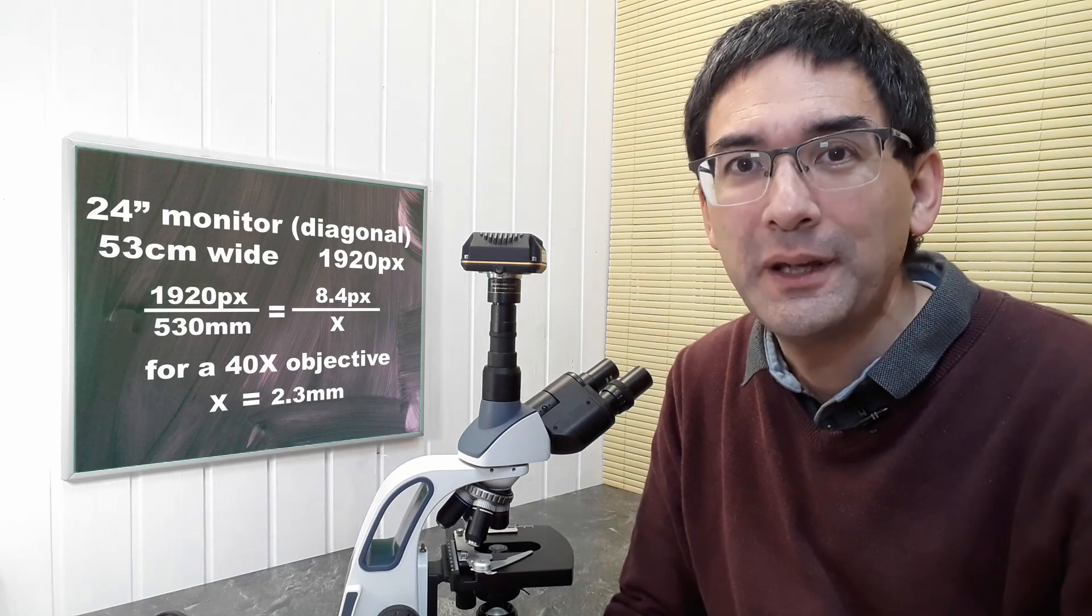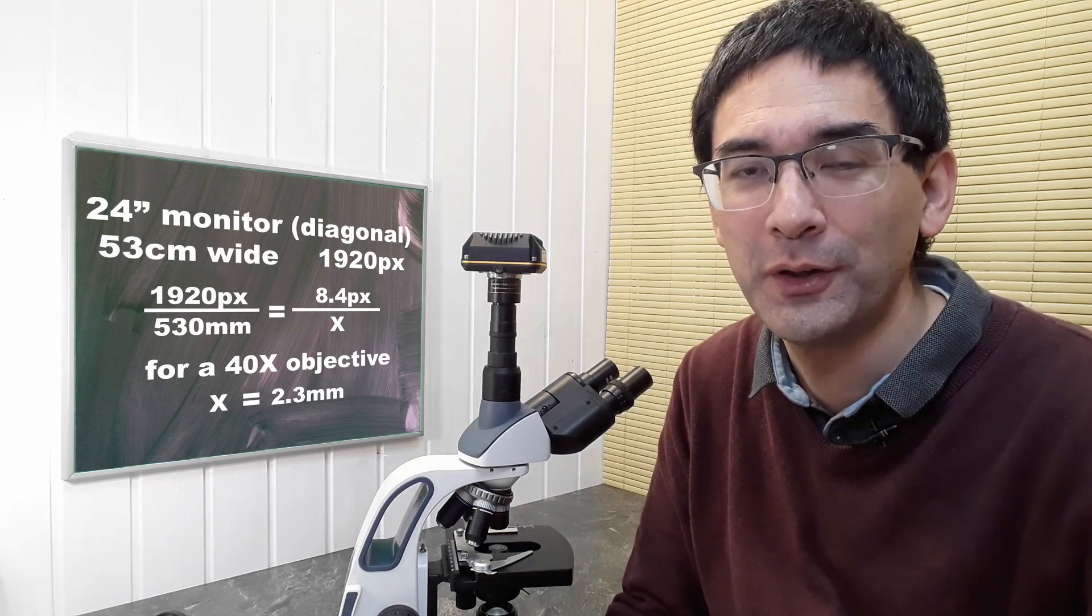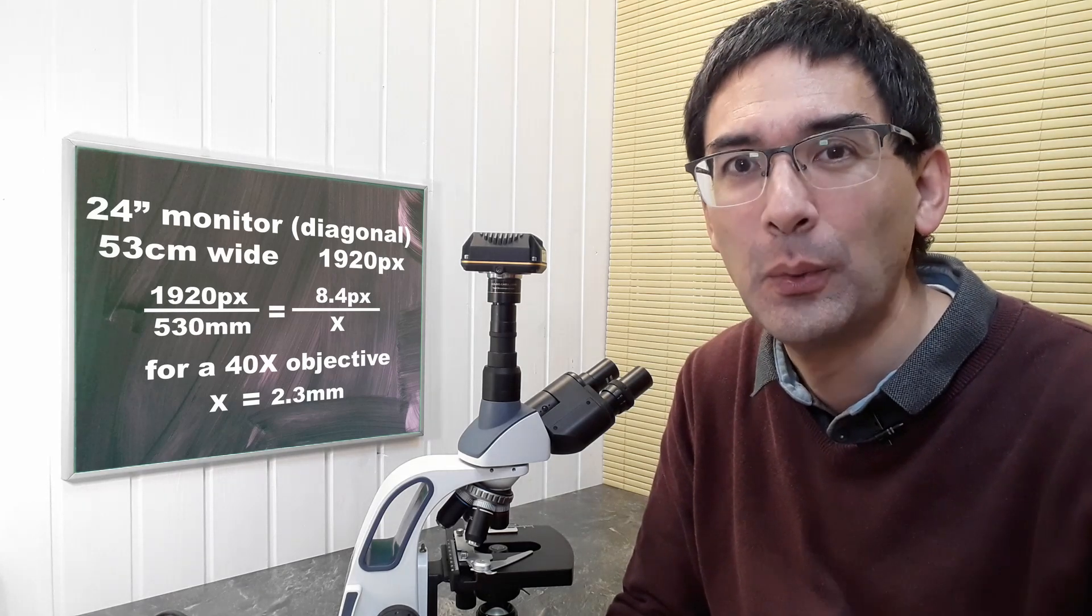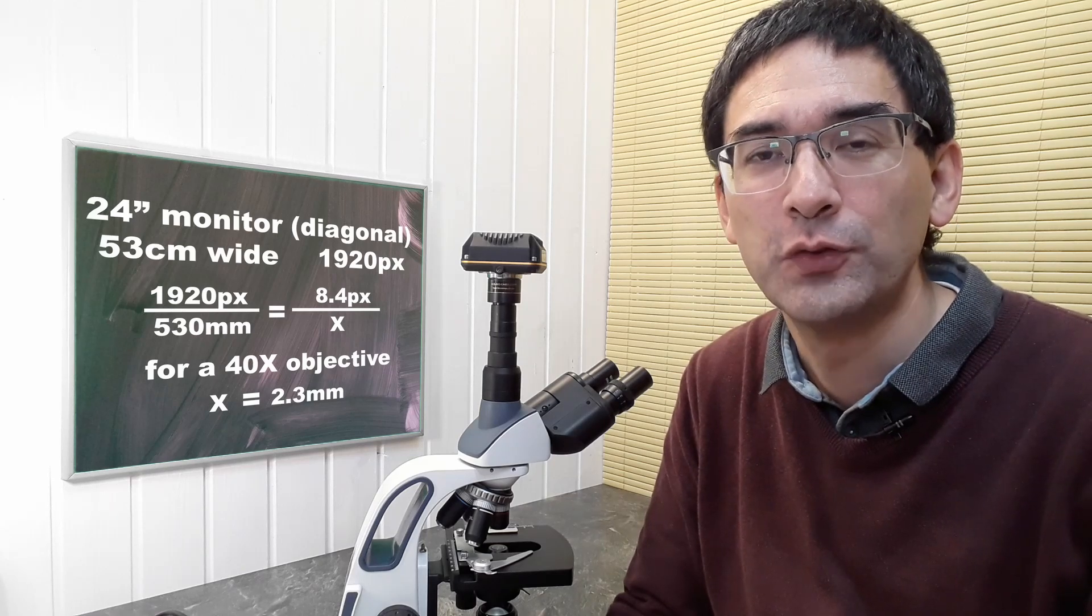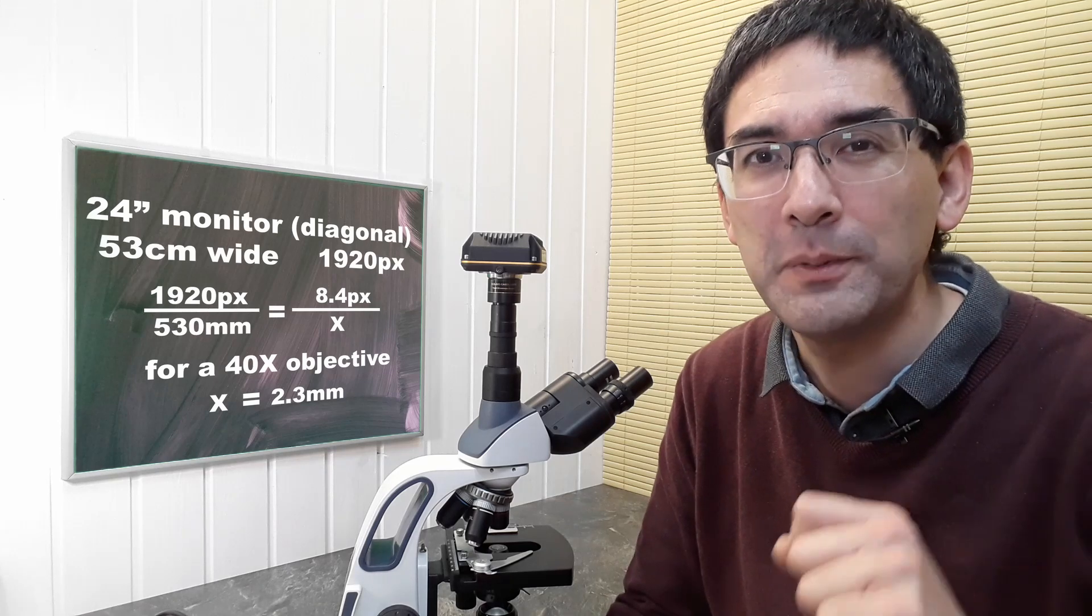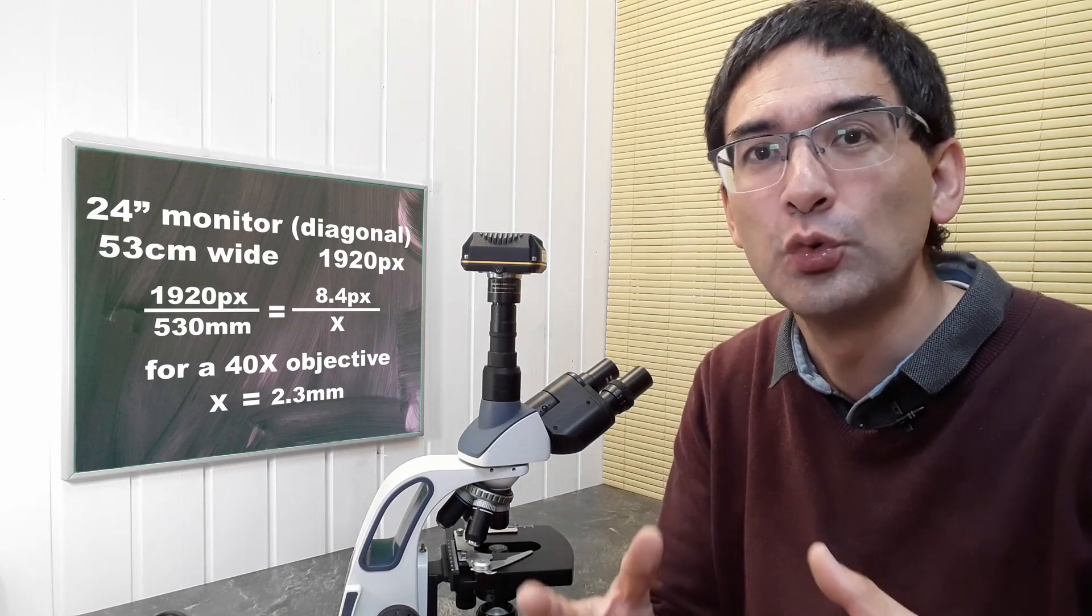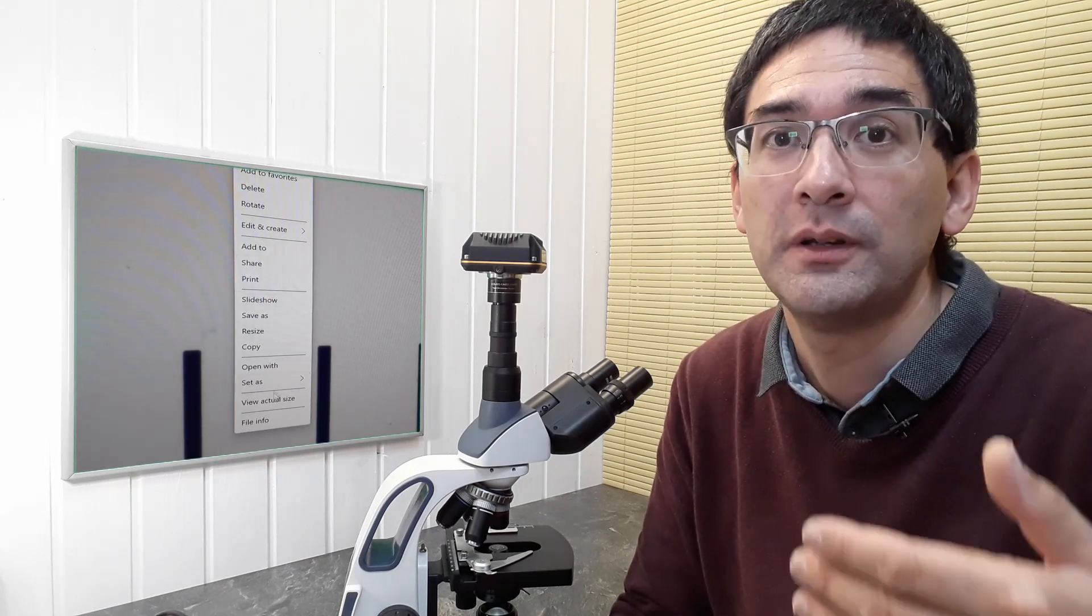Again, we do a direct proportion calculation: 1920 pixels divided by 530 millimeters equals 8.4 pixels divided by x. We get a size of 2.3 millimeters. A bacterium of size one micrometer will be shown with a size of 2.3 millimeters on my computer monitor. We have to be careful not to zoom in or out, and set the image to 100% original size.